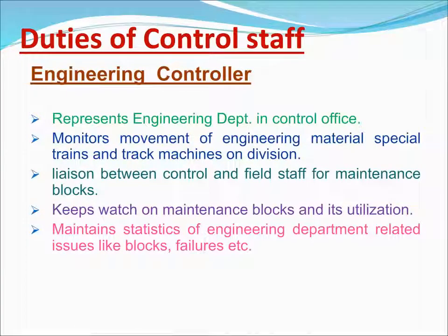The Engineering Controller represents the engineering department in the control office. Monitors movement of engineering material, special trains, and track machines on the division. Liaises between control and field staff for maintenance of blocks. Keeps watch on maintenance blocks and utilization. Maintains statistics of engineering department related issues like blocks, failures, etc.